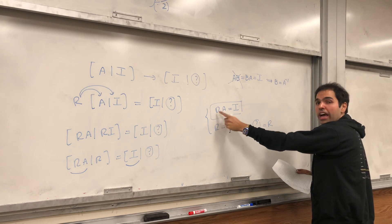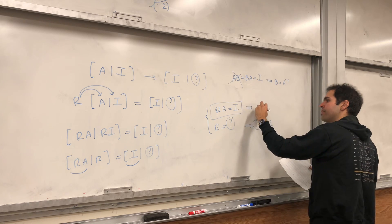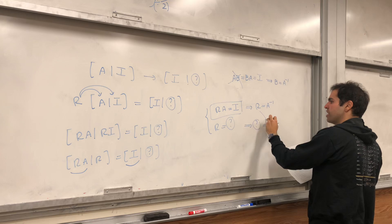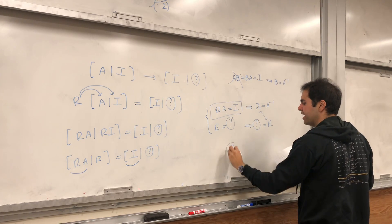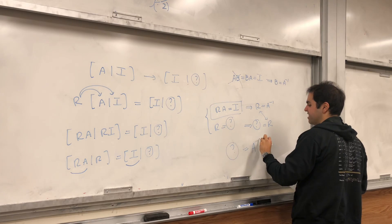that's exactly what we have. A is a square matrix. R is a square matrix. So, in particular, R is A inverse. So, this question mark at the end, so the stuff you get after you row reduce is precisely A inverse.